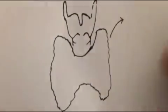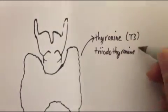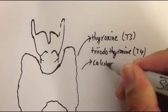It secretes two main hormones, thyroxine and triiodothyronine. It also secretes calcitonin which is involved in calcium metabolism.